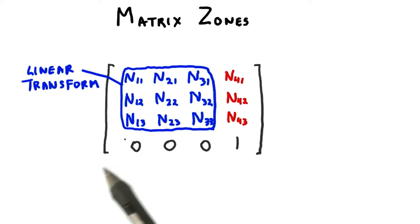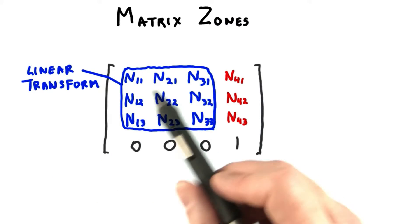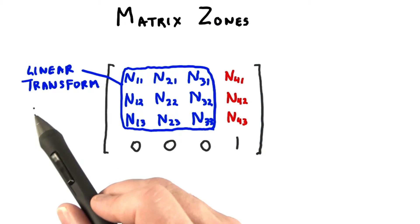The upper left area of the matrix is where rotations and scales show up. If a transform changes only this area of the matrix, it's called a linear transformation.